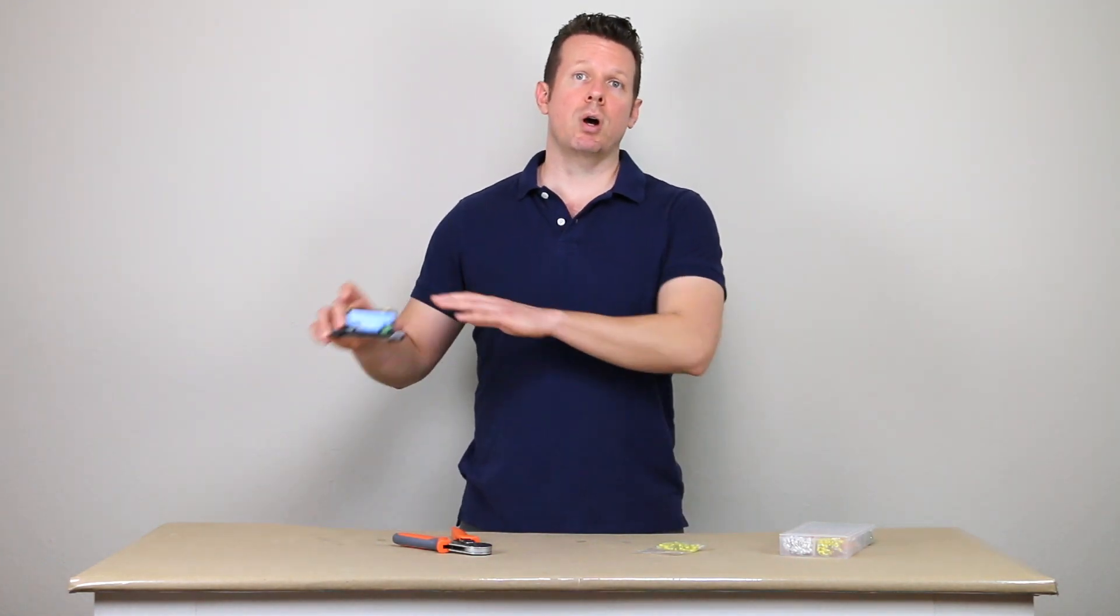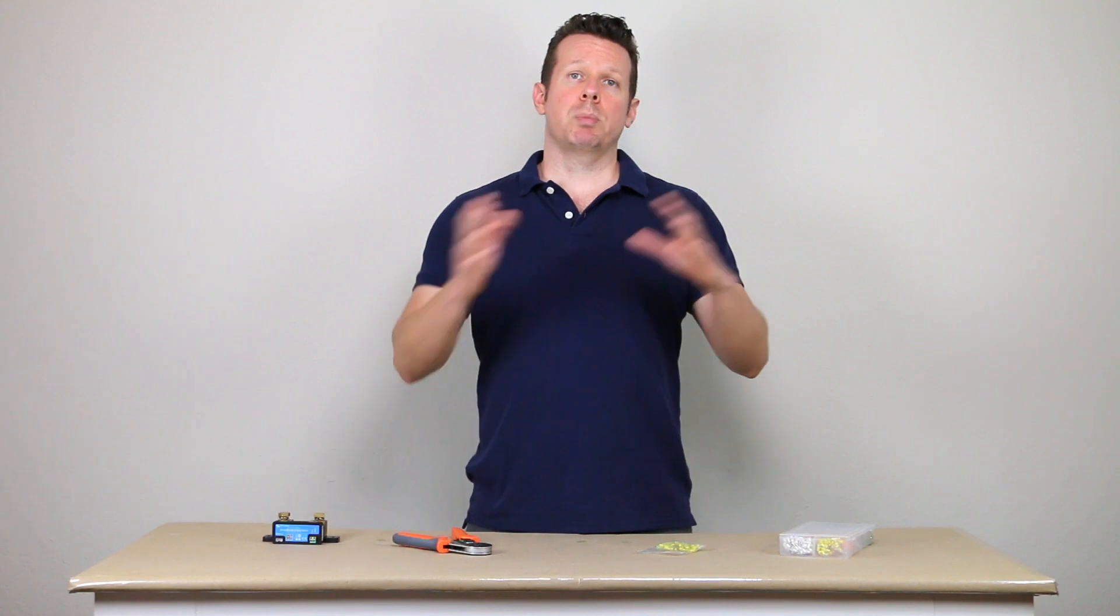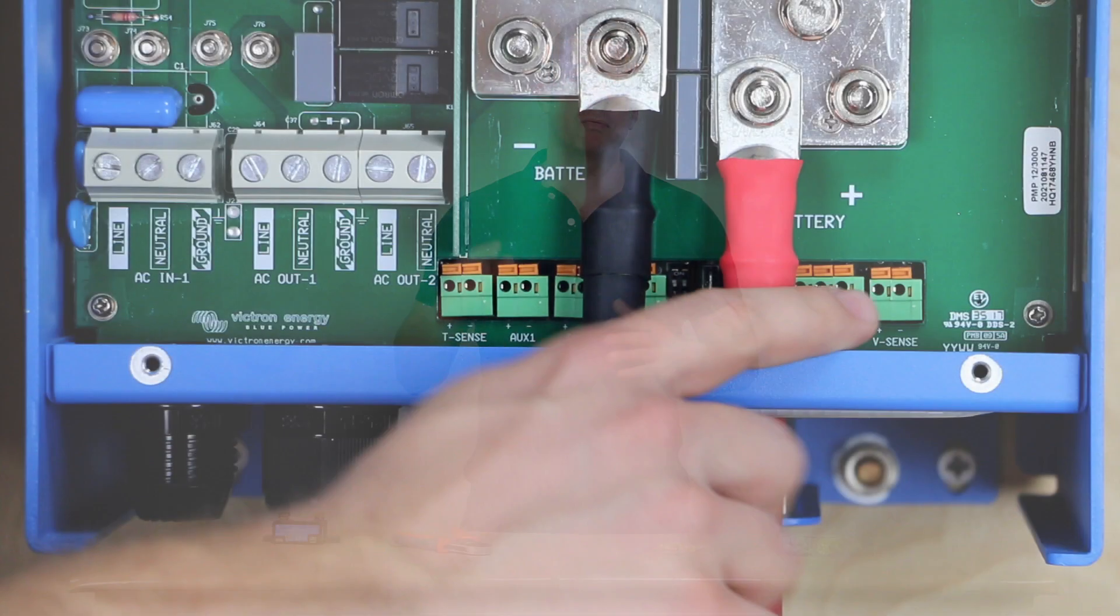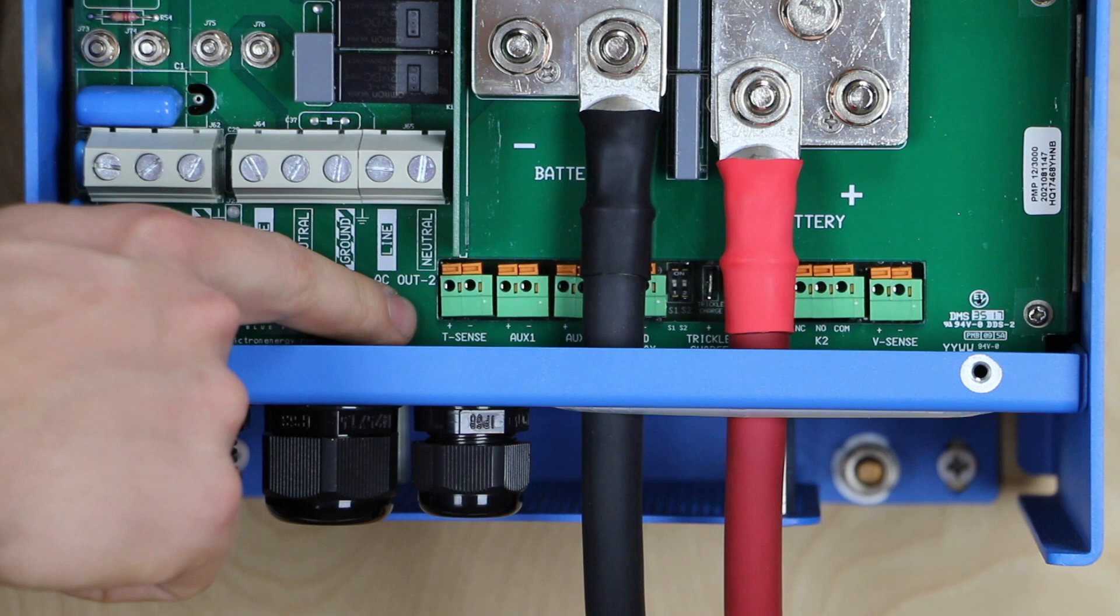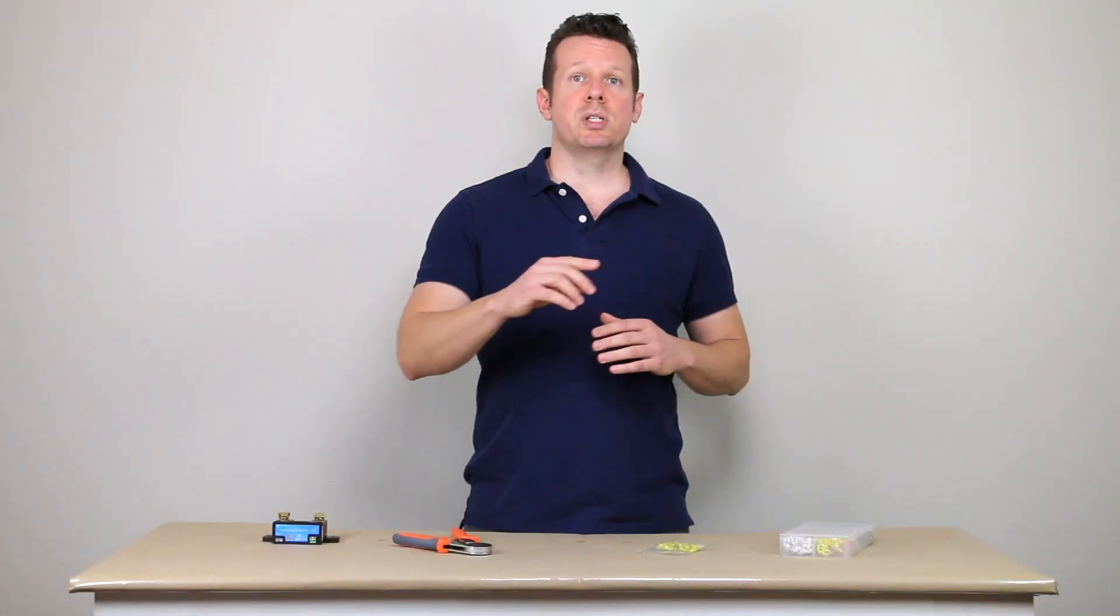This is a smart shunt from Victron. And also for larger appliances like your inverter charger, you may have inputs for voltage or temperature, and you're going to want to insert these small wires, typically 18 gauge wires or smaller into these inputs.